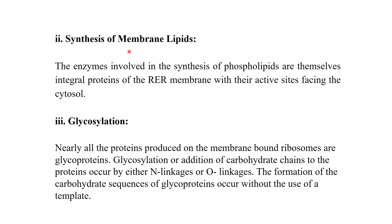The enzymes involved in the synthesis of phospholipids are themselves integral proteins of rough ER membranes, with their active sites facing the cytosol. Nearly all proteins produced on membrane-bound ribosomes are glycoproteins. Glycosylation — the addition of carbohydrate chains to proteins — occurs by either N-linkage or O-linkage. The formation of the carbohydrate sequences of glycoproteins occurs without the use of a template.